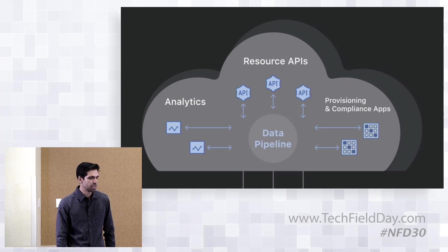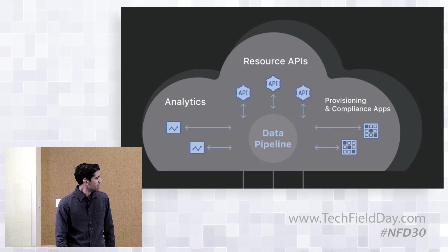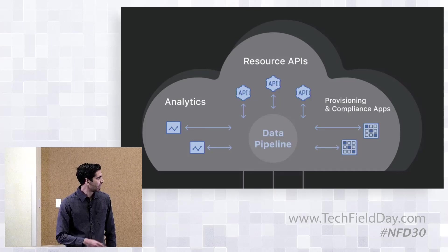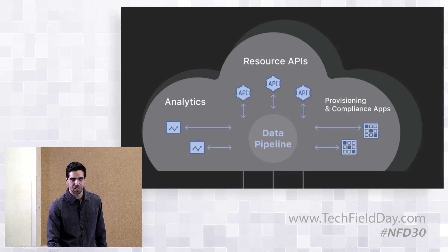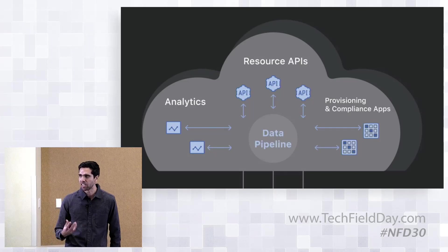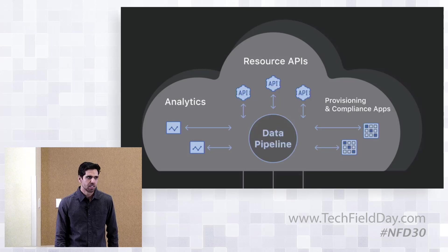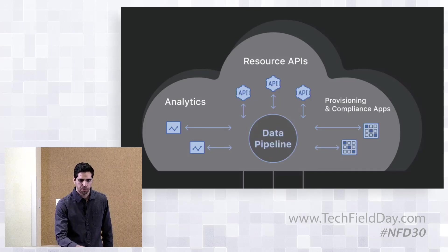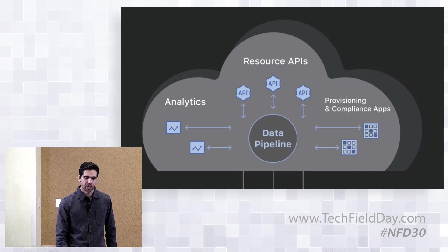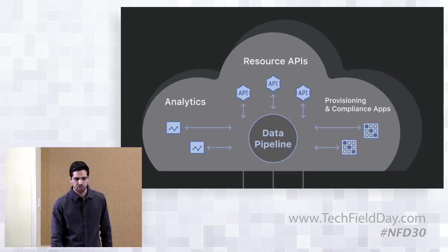We have some demos about extensibility coming later. This picture looks similar — with fewer squiggly lines than the EOS picture — but all of these systems talk to a centralized database, just like the centralized SysDB. We have one EOS that works across all platforms. With CloudVision built this way, you can have a centralized data pipeline, plug in different applications, and it scales out well.